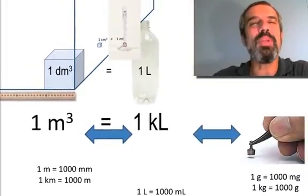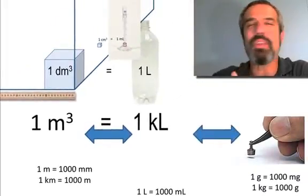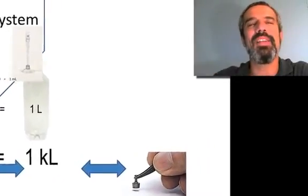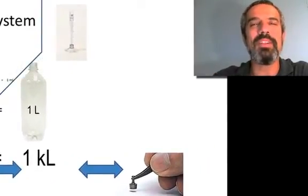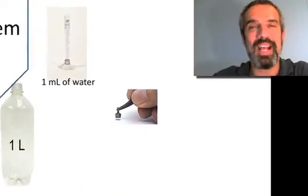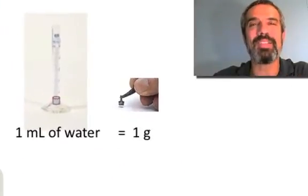But what's the connection between all those and the grams? Because I said they're all connected. They're all based on the original meter. Well, here it is. That one milliliter of liquid we talked about before, assume that's one milliliter of water. Guess what you've got? You've got a gram. That's right. A milliliter of water weighs a gram.